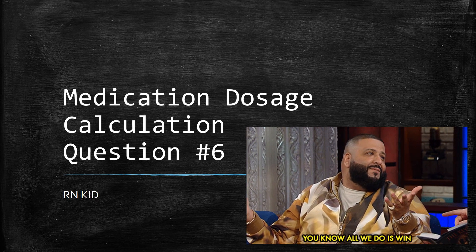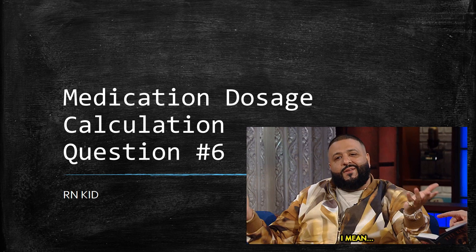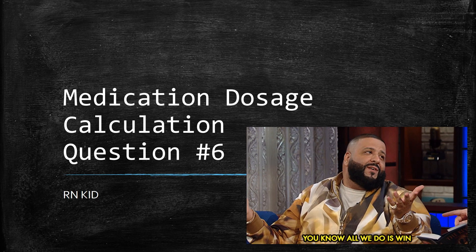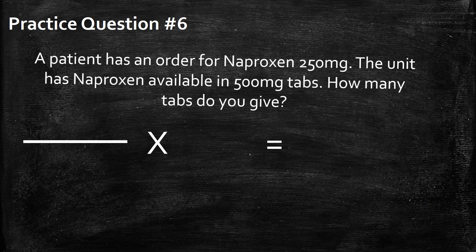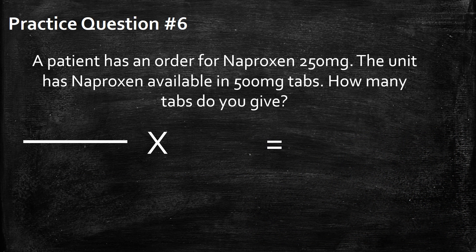Medication dosage calculation question number six. A patient has an order for naproxen 250 milligrams. The unit has naproxen available in 500 milligram tabs. How many tabs do you give?